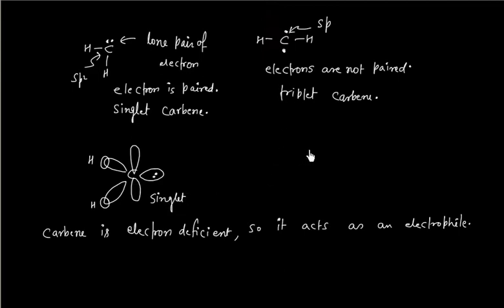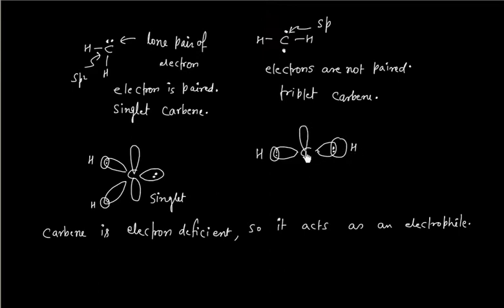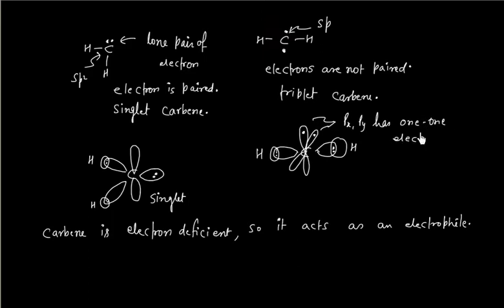For triplet carbene, which is sp hybridized, we have one carbon-hydrogen bond in one sp lobe, and another sp lobe with a hydrogen. Now we have two p lobes: one p lobe has 1 electron, and another p lobe perpendicular to it also has 1 electron. So if one is px, the other is py, and px and py each have 1 electron. This is your triplet carbene.